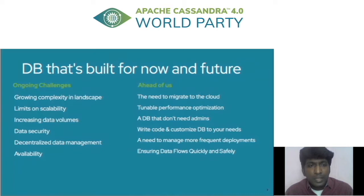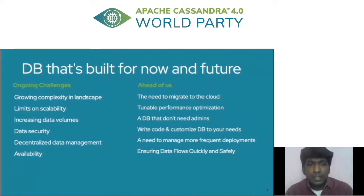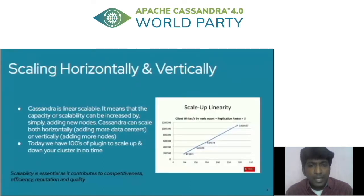The ongoing challenge for a DB — we have many, and for at least the next 10 years these are the challenges we have. Cassandra is one DB that is solving these ongoing challenges pretty well: the growing complexity of data, the limits on scalability when scaling databases, the increase in data volumes, and security and availability concerns. There are also big future challenges like moving to the cloud and eliminating operational overhead, and Cassandra is one DB where both ongoing and future challenges are met.